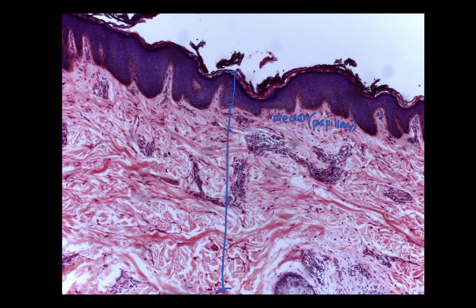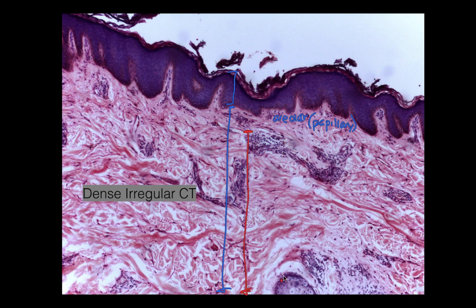Take a moment and see if you can recognize this connective tissue type down here. This is going to be dense irregular connective tissue. From about here down, that's the dense irregular connective tissue, and that layer is going to be called the reticular layer. So the papillary layer and the reticular layer make up the dermis. In this one slide we got both areolar connective tissue and dense irregular connective tissue.